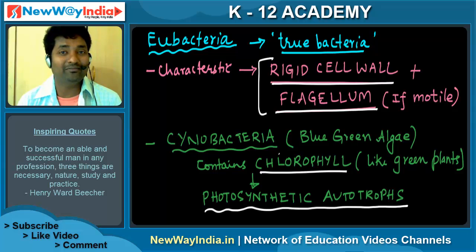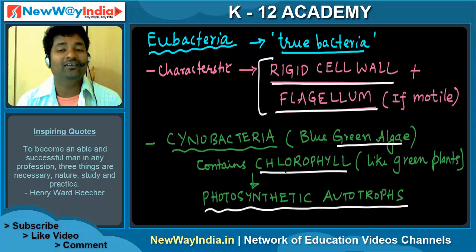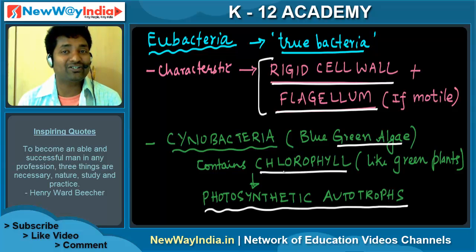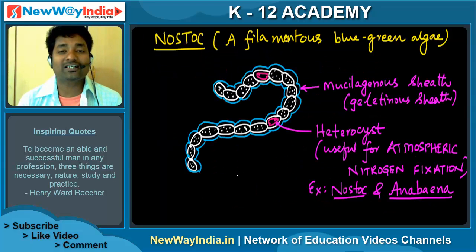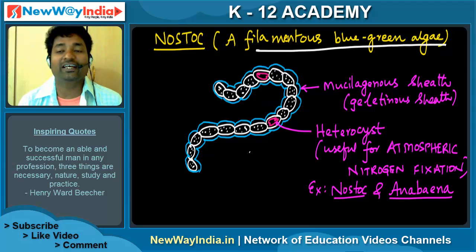Cyanobacteria contain chlorophyll — chlorophyll is the indication of greenness. Like green plants, they are called photosynthetic autotrophs. An example is nostoc, which is a filamentous blue-green algae.